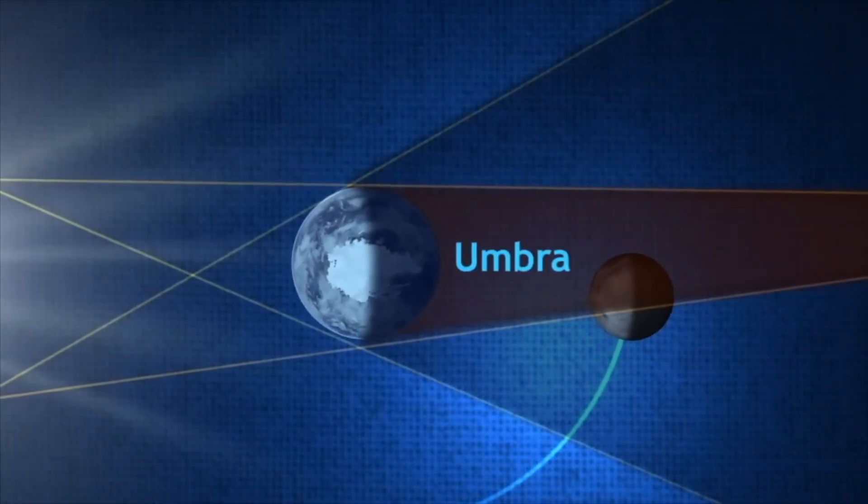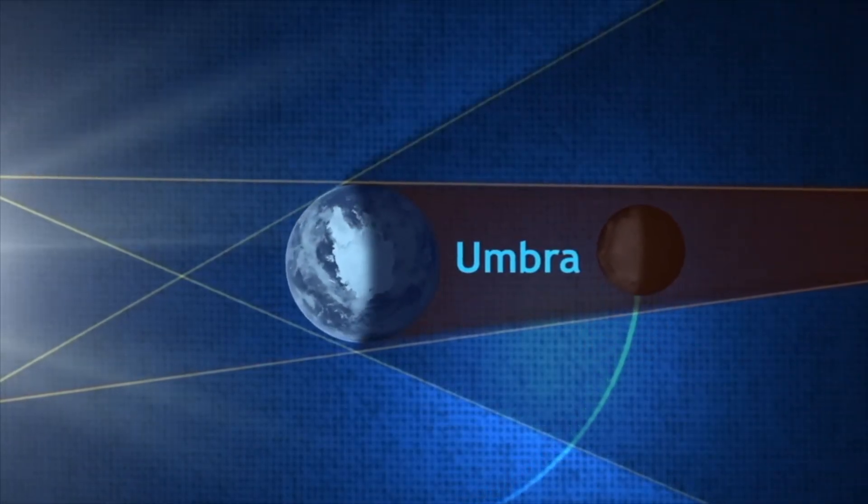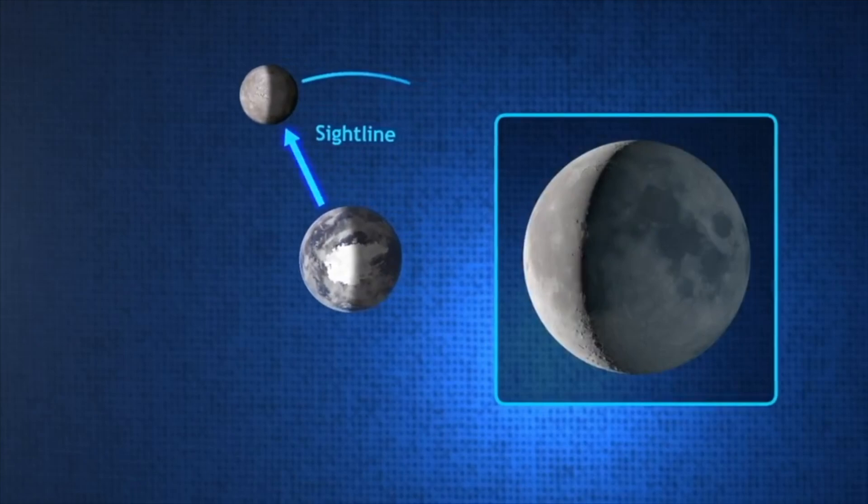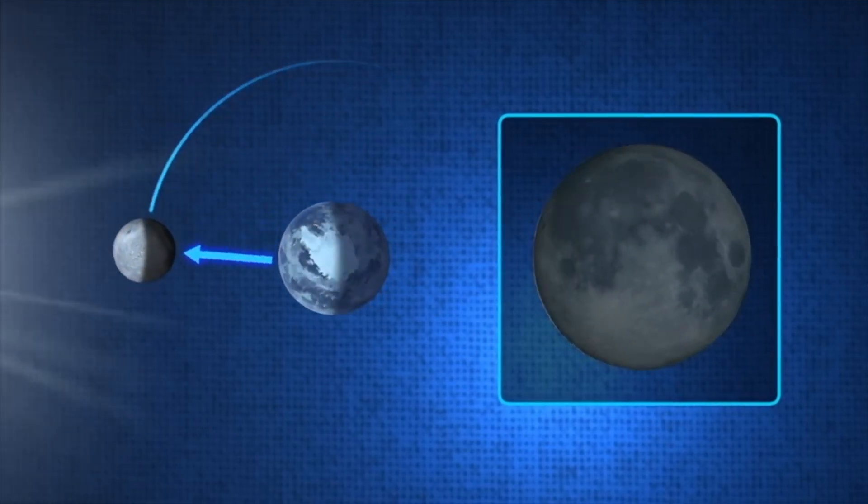That shadow the Earth casts is called the umbra, and you can observe this for yourself by going out and spotting the International Space Station passing overhead. When it crosses the terminator of the Earth into shadow, it blinks out.